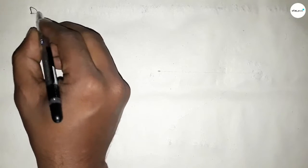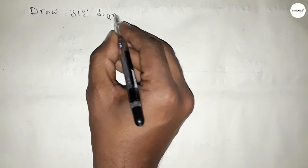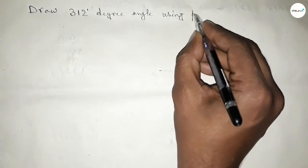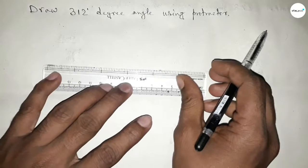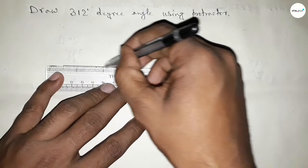Hi everyone, welcome to SSR Classes. Today in this video we have to draw a 312 degree angle by using a protractor. So let's start the video. First of all, we have to draw here a straight line of any length.